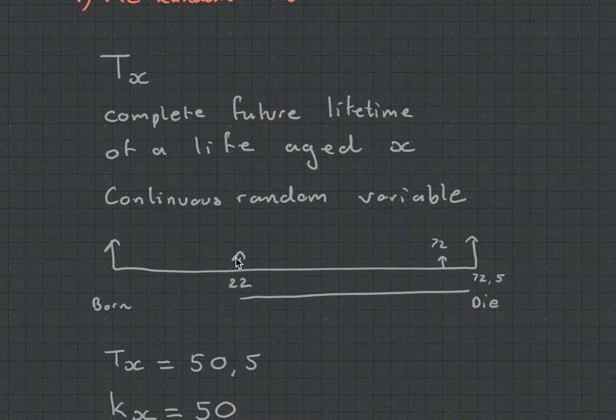At age 22, how much longer am I going to be living for? We don't know. I could die tomorrow, so it could be the very next day. I could, you know, they could discover new technology and I live for another 200 years. But let's say I unfortunately die at age 72 and a half. It means that my complete future lifetime from the age of 22 would be 50 and a half. This is where it does get a little bit tricky, because we are looking at the difference between the start age and the end age. That is what the complete future lifetime is. We're not worrying about the previous years that I've survived. We're only concerned with where I am now and where I'm going to be finishing.